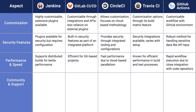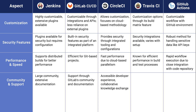And for community and support, Jenkins has a large community with extensive documentation. GitLab CI/CD offers support through GitLab's community and documentation. CircleCI has an accessible developer experience with collaborative knowledge exchange. Travis CI has strong community support, especially in the open source domain. GitHub Actions has an extensive GitHub community with intuitive setup.